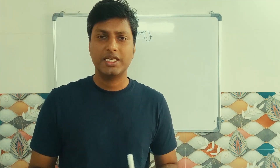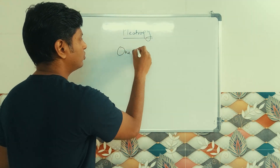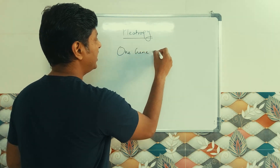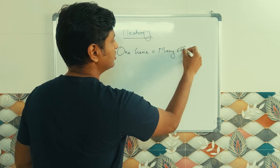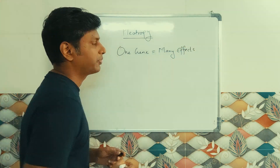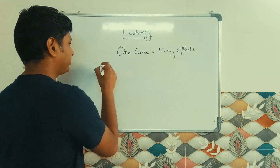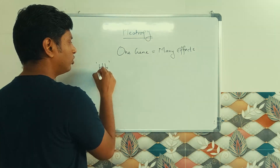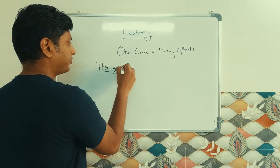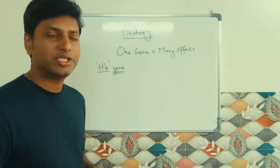Now let us understand what exactly pleiotropy is. Pleiotropy simply means one gene shows many effects. For example, there is a particular gene which codes for hemoglobin — let us consider this as the HbA gene, the hemoglobin gene.